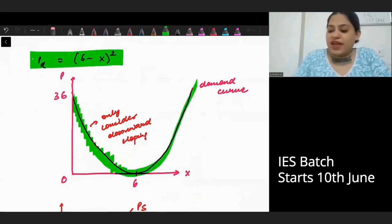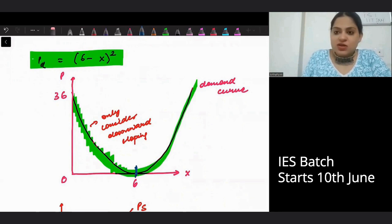So when x is 6, y is 0. So it becomes a parabola with x is equal to 6.